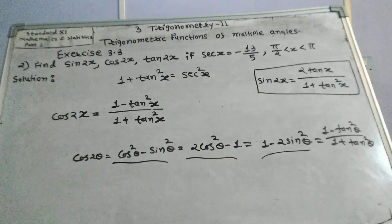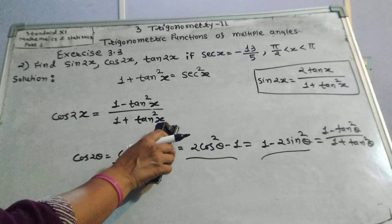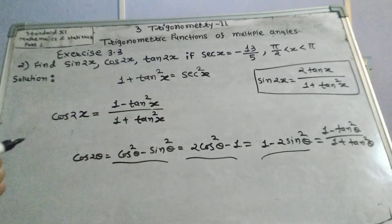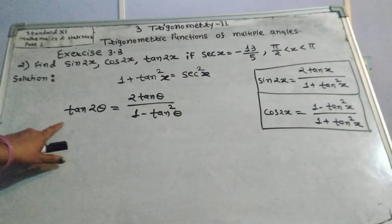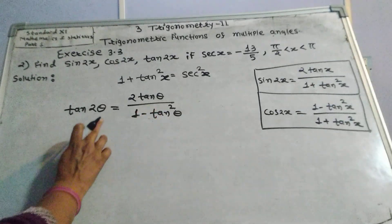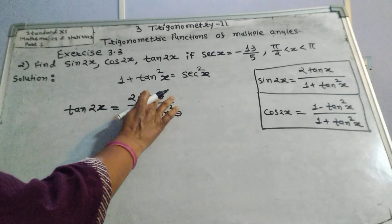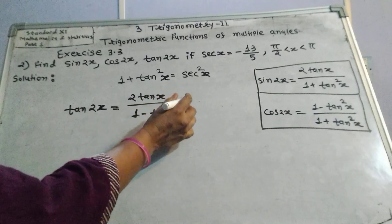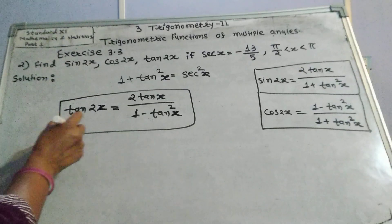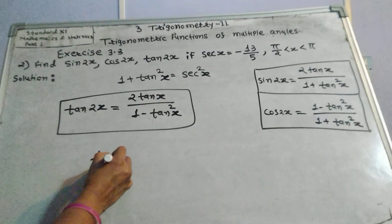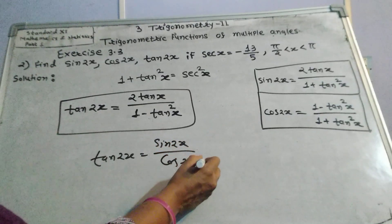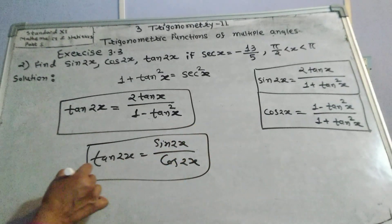cos 2x equals 1 minus tan²x divided by 1 plus tan²x — we will use this formula to find the value of cos 2x. For tan 2x, the formula is 2 tan x divided by 1 minus tan²x. We can also get tan 2x as sin 2x upon cos 2x, so we need to find tan x.